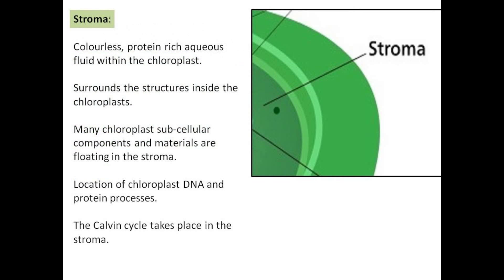The stroma is a colorless, protein-rich aqueous fluid within the chloroplast. It surrounds the structures inside the chloroplasts. Many chloroplast subcellular components and materials are floating in the stroma, which is also the location of chloroplast DNA and protein processes. The Calvin cycle takes place in the stroma.